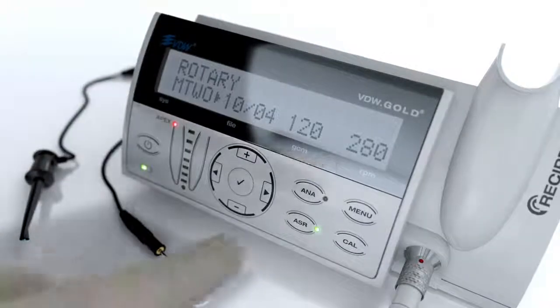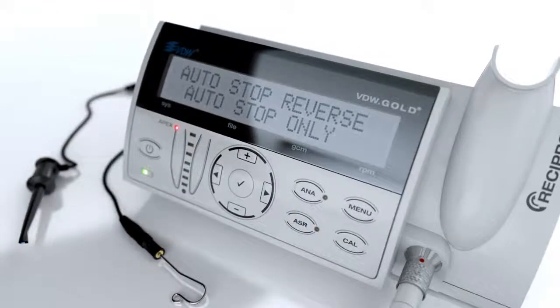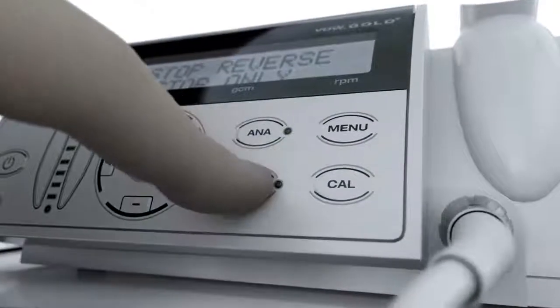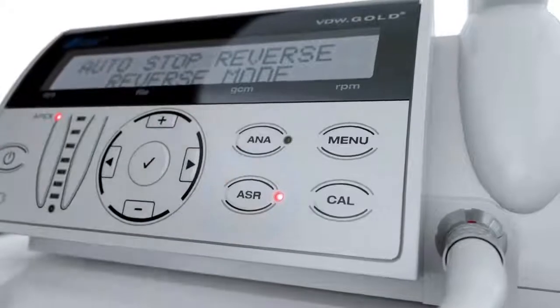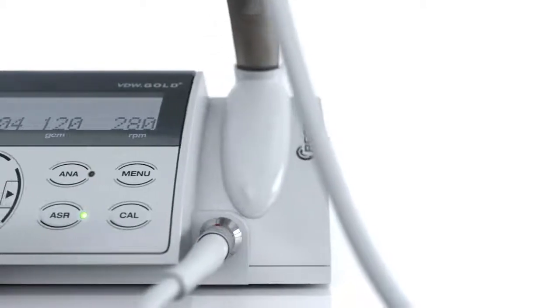When the ASR key is not lit, the motor stops once its torque limit has been reached. However, the motor will not reverse in counterclockwise direction. When the ASR key lights red, the motor will turn in counterclockwise rotation only.